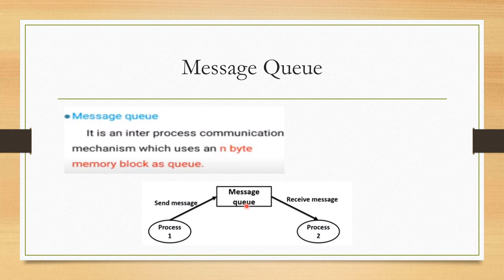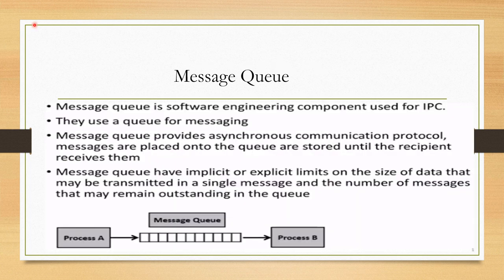For example, the Windows XP operating system kernel maintains a single system message queue and one process- or thread-specific message queue. A thread that wants to communicate with another thread posts the message to the message queue. The kernel picks up the message from the system queue one at a time, examines it, and passes it to the destination thread or process. We can define a message queue as a software engineering component used for IPC — it is a type of asynchronous communication protocol, because the recipient receives only when it is ready.